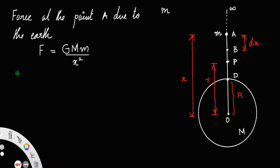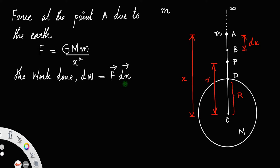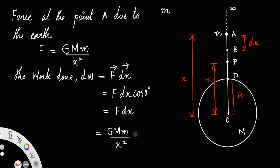The work done dW to move the mass from A to B: work is equal to force times displacement. Since the force and displacement are along the same direction, it is F·dx, which equals F·dx·cos(0). Since the force is from A to B and the displacement is also from A to B, we simply write F dx = GMm/x² dx.